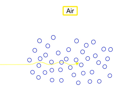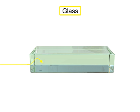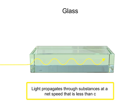When light encounters a medium such as air, water, or glass, it propagates through the substance at a net speed that is less than C.